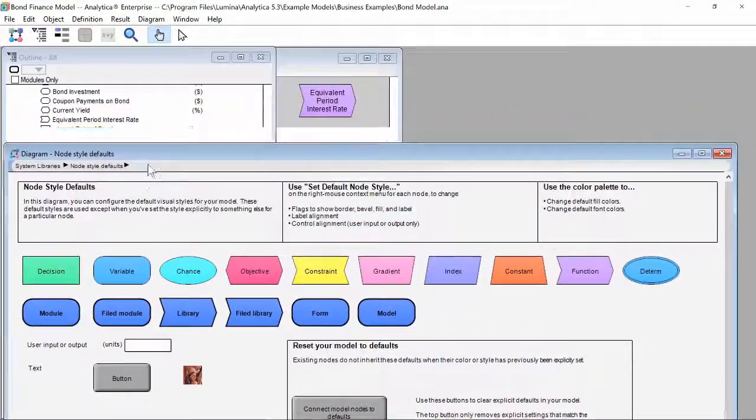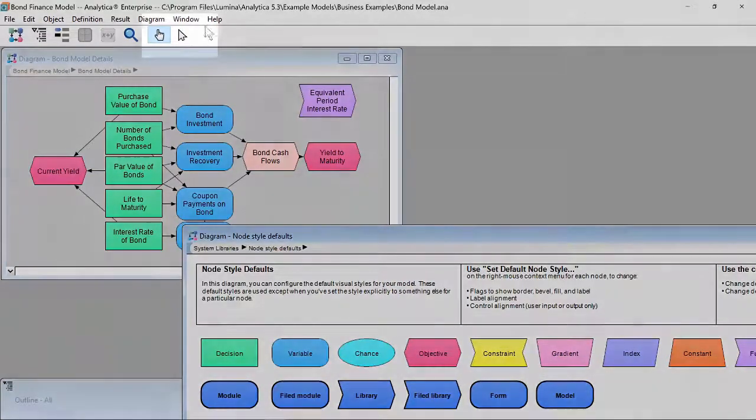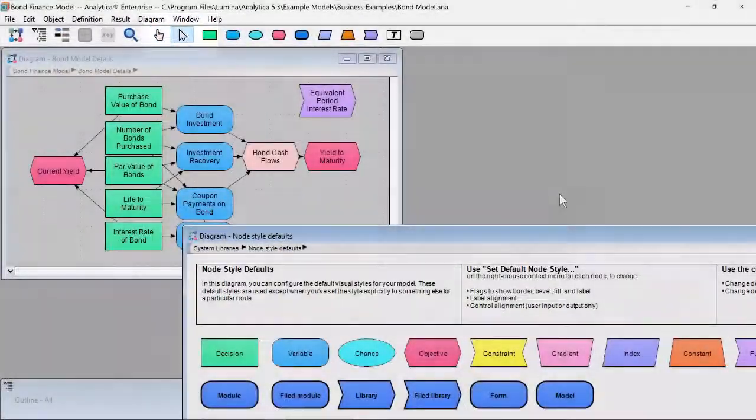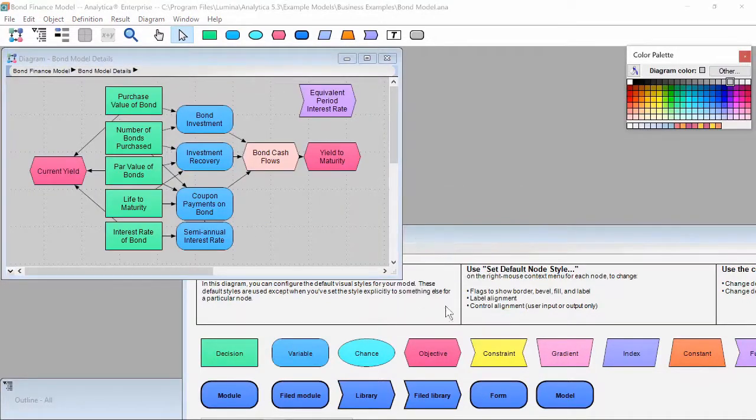You'll now see a new diagram window with all of the different types of nodes with their default colors. From this point on, I'll need to go into Edit Mode to make changes. Before we begin, right click on some empty space and select Show/Hide Color Palette at the bottom.